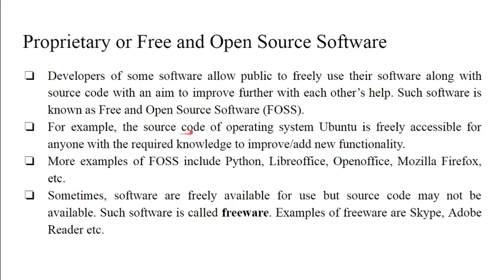For example, the source code of the Ubuntu operating system is freely accessible for anyone with the required knowledge to improve or add functionality. More examples of free and open source software include Python, MySQL, Java, NetBeans, LibreOffice, OpenOffice, and Mozilla Firefox. There are no legal issues while distributing open source software because users are free to edit and redistribute it.